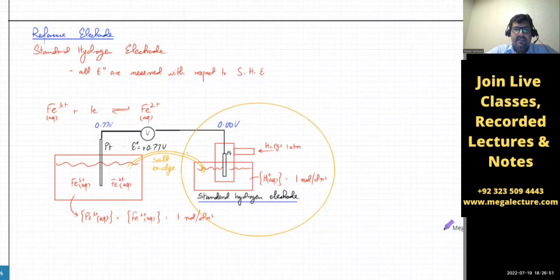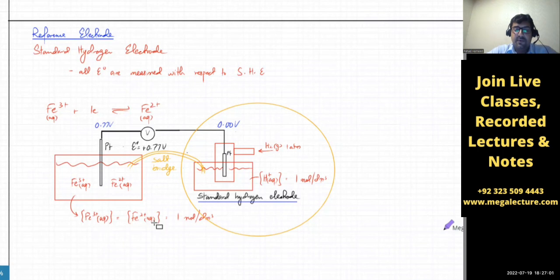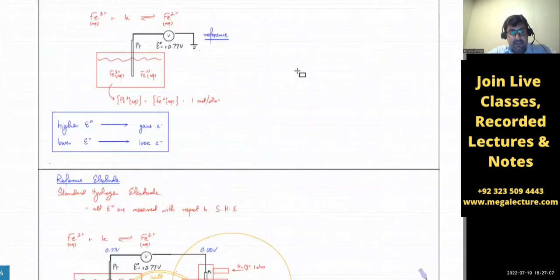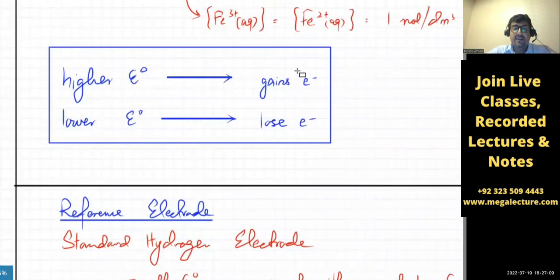Tomorrow we'll discuss what happens when two electrodes are connected, what the salt bridge does, and the rest of the electrochemical cell details. Keep the key principle in mind — this is the whole topic.